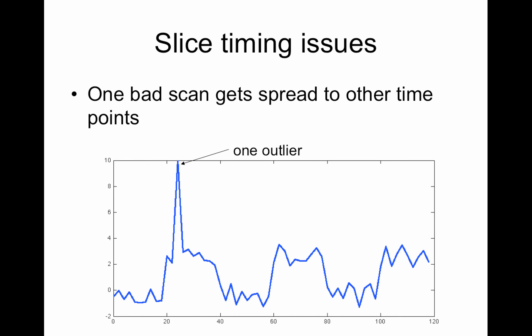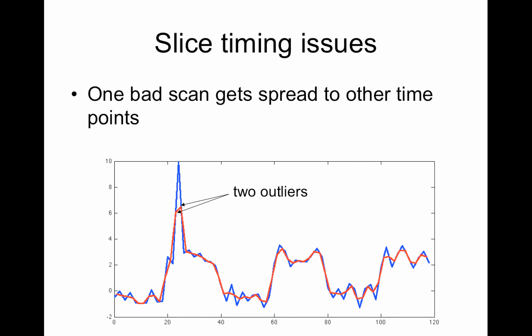One issue with slice timing correction is that a bad scan gets spread out to other time points. Here we have a fictitious block design with an outlier — a little spike in the data. If you use interpolation, you're now going to have two outliers, because this point is used to interpolate the data both before it and after it.